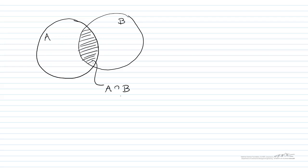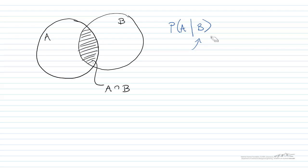If we look at this, we have the intersection of A with B. We can relate this to conditional probability. So the conditional probability given that event B has occurred — because we're given that B has occurred, we can pair this down to being on the right circle. Event B has occurred, and what we're trying to find is what's the probability that A has also occurred.